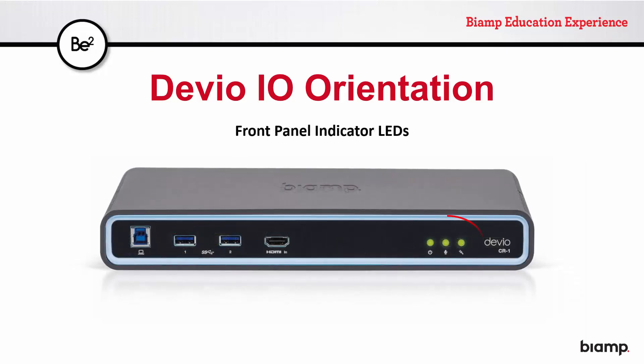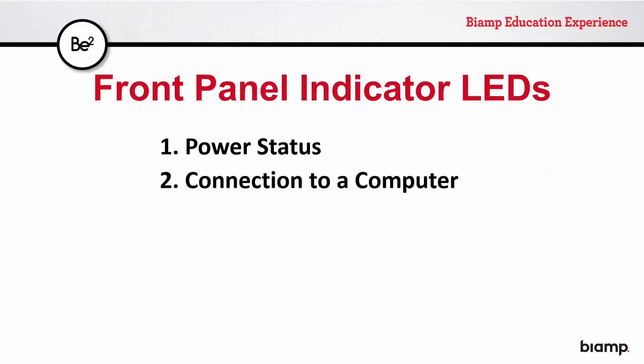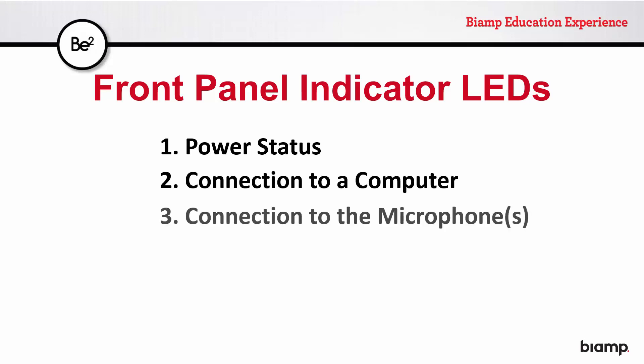Let's start with the status indicators on the front panel. There are three LEDs which give us four basic pieces of information, indicating various states of the CR1 itself with regard to its power status, its connection to a computer, its connection to the microphone or microphones, and the status of the auto setup feature. There is a detailed table on support.biamp.com/Devio delineating the possible LED combinations.